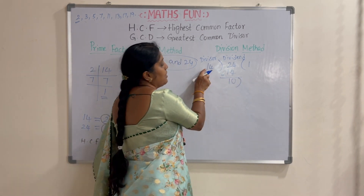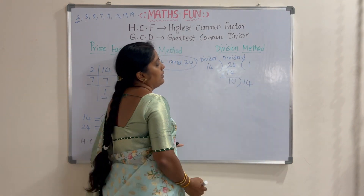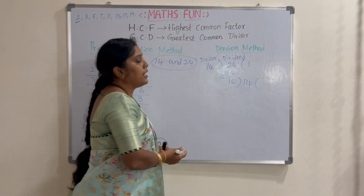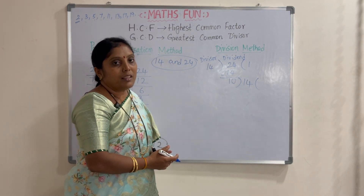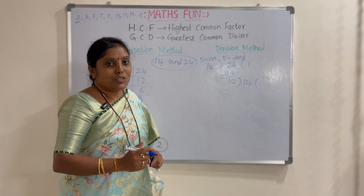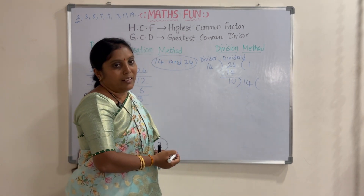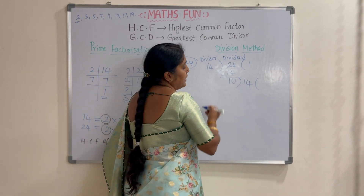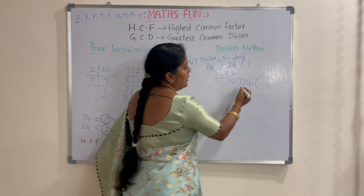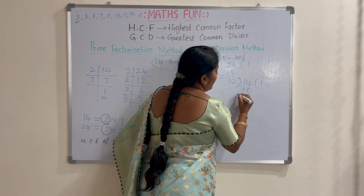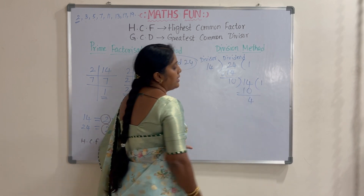The previous divisor 14 will now become the dividend. So we continue the division: 14 divided by 10. With the 10 times table, 10 ones are 10 and 10 twos are 20, which is bigger. So we take 10 once. Subtracting: 14 minus 10 is 4. We got remainder 4.